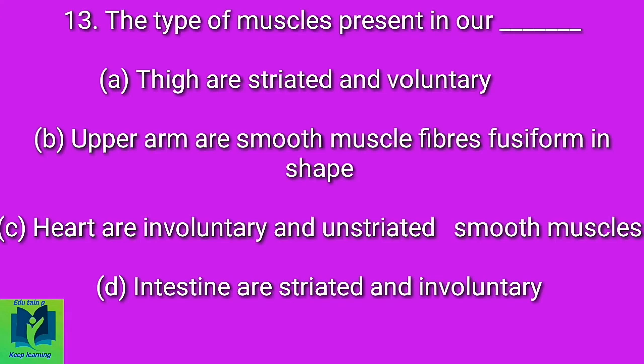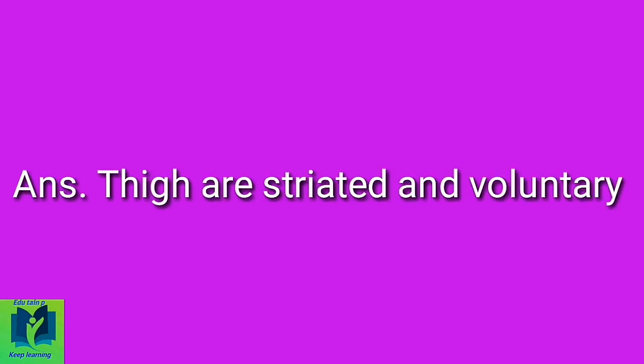The type of muscles present in our — Option A: Thigh are striated and voluntary. Option B: Upper arm are smooth muscle fibers, fusiform in shape. Option C: Heart are involuntary and unstriated smooth muscles. Option D: Intestine are striated and involuntary. Answer: Thigh are striated and voluntary.